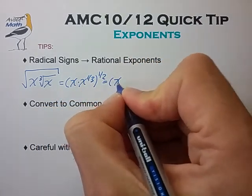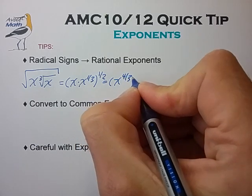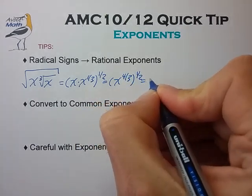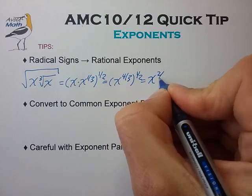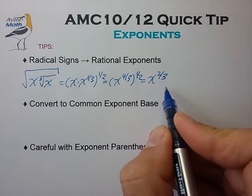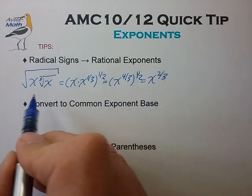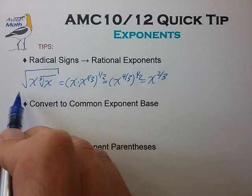In this case, x to the 2/3. And this final expression is much simpler to work with than the original nested radical expression.